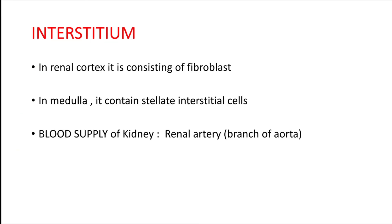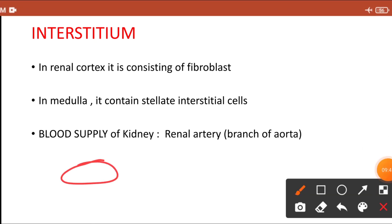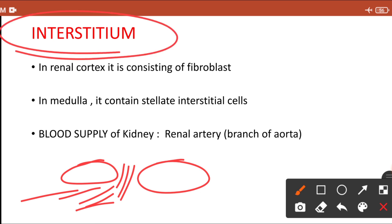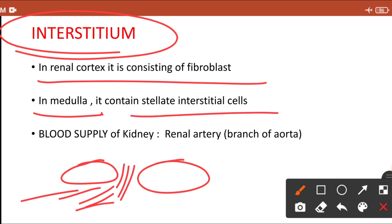The interstitium is the portion between the tubules, made up of fibroblasts. In the cortex there are many fibroblasts, while in the medulla fibroblasts are fewer and there is a presence of stellate interstitial cells.